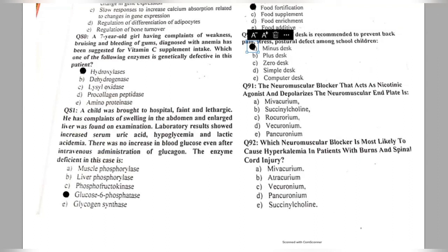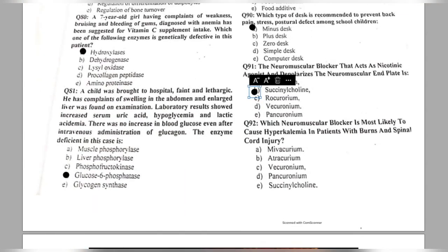Questions 91-92: the neuromuscular blocker that acts as a nicotinic agonist and depolarizes the neuromuscular end plate is succinylcholine, which is the depolarizing neuromuscular blocker. The neuromuscular blocker most likely to cause hyperkalemia in patients with burns and spinal cord injury is also succinylcholine.